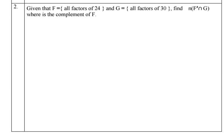Let's go to question 2. We have been given set F, which is the set of all factors of 24, and set G, which is the set of all factors of 30. The question asks us to find the number of elements in F-complement intersection G, where F-complement is the complement of F.